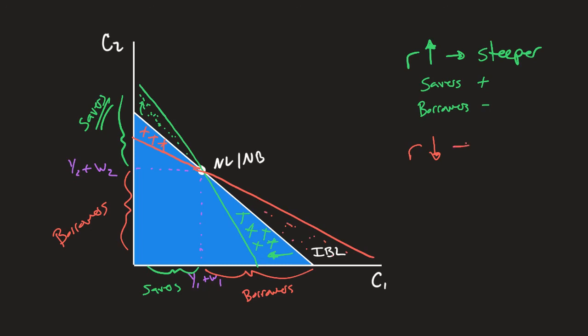So what exactly does this mean? This means that it becomes flatter. Notice that the IBL, our new IBL, is now going to be flatter. And our savers are worse off, and our borrowers are better off.